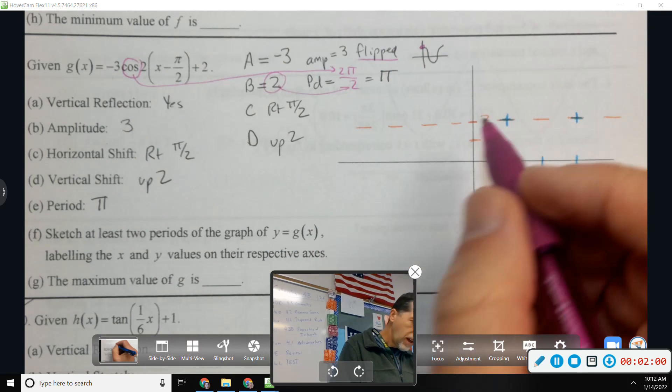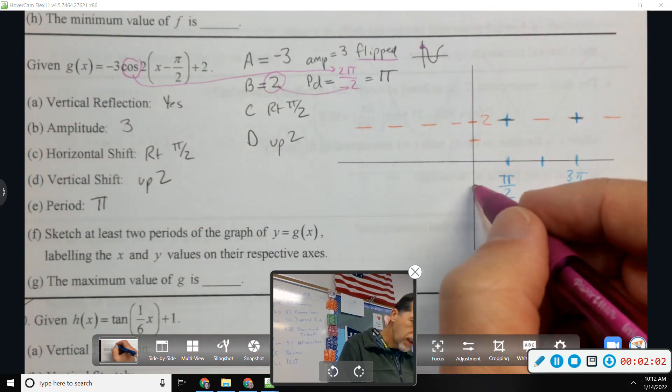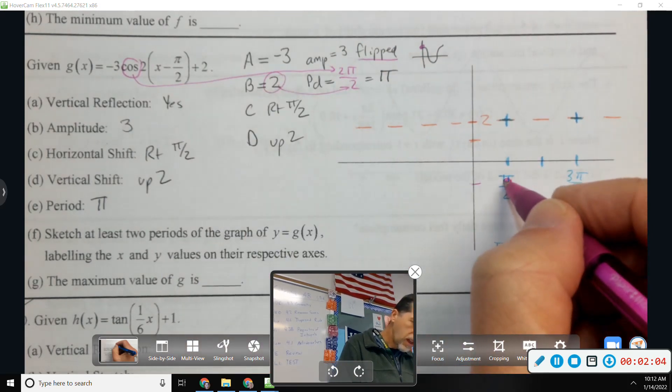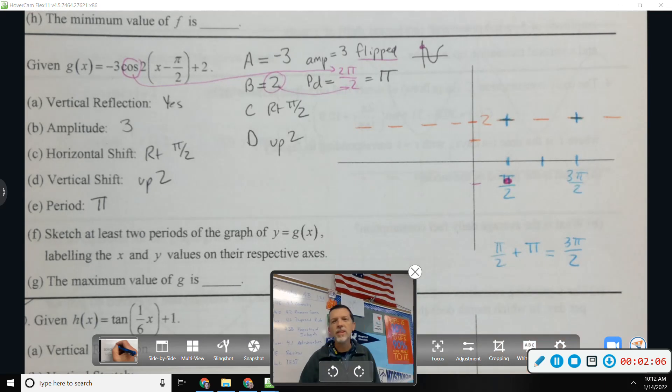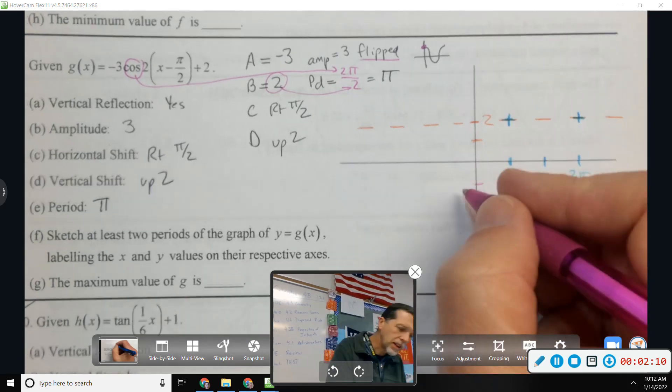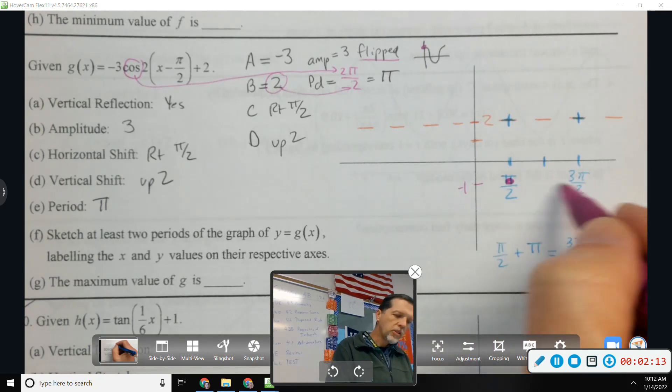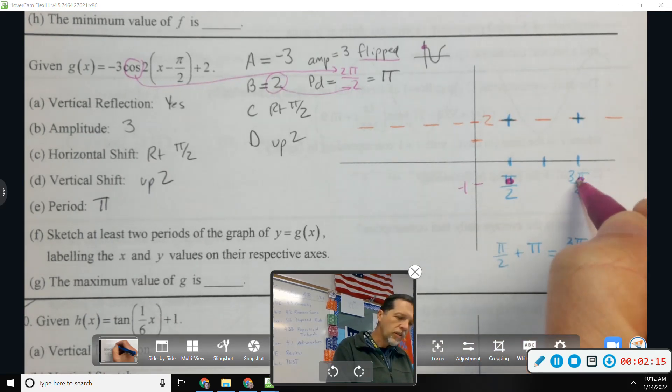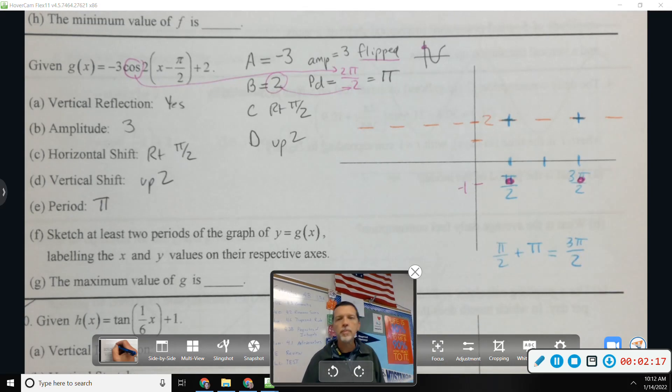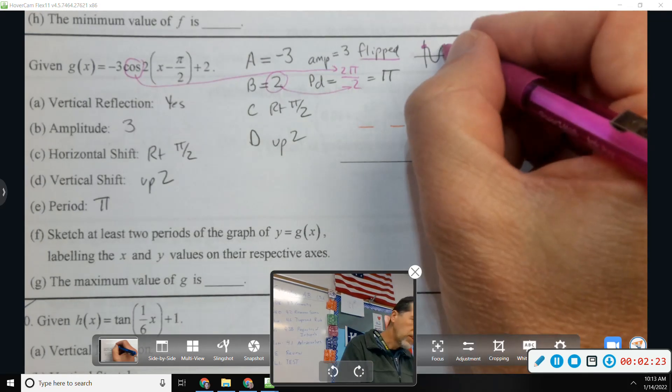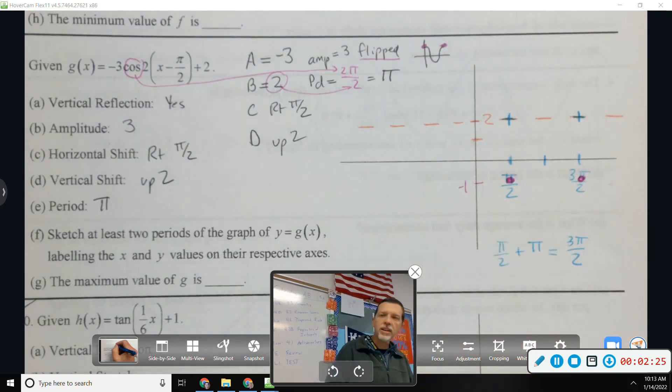So I'm going to go 3 away. We're right in the middle of the label there. 3 down. That puts me at negative 1. And wherever you start is also where you finish. So over there at 3 pi over 2. So that's the two endpoints, the beginnings or the endings, however you want to phrase it.